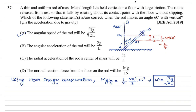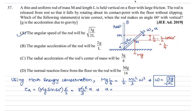Next, for angular acceleration alpha, we need torque about point A. The weight mg acts at the center of mass. The torque component providing rotation is mg·sin60, with perpendicular distance l/2. Setting torque = Iα: mg·sin60·(l/2) = (ml²/3)·α. Solving, ml cancels and we get α = 3√3g/4l. So option B is not correct as stated.